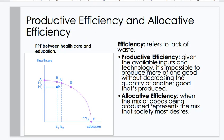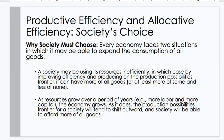Productive efficiency and allocative efficiency. Efficiency refers to lack of waste. Productive efficiency: given the available inputs and technology, it's impossible to produce more of one good without decreasing the quantity of another good produced. Allocative efficiency: when the mix of goods being produced represents the mix that society most desires. On a PPF showing healthcare and education, points on the line are productively efficient. If we were at a point like R — inside the frontier — that would not be productively efficient.